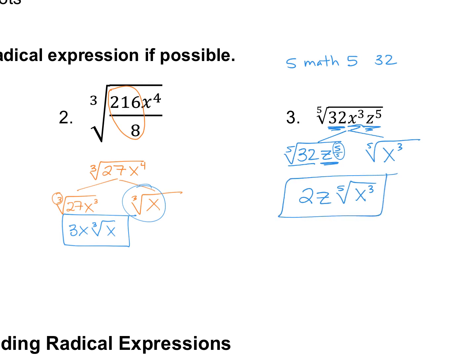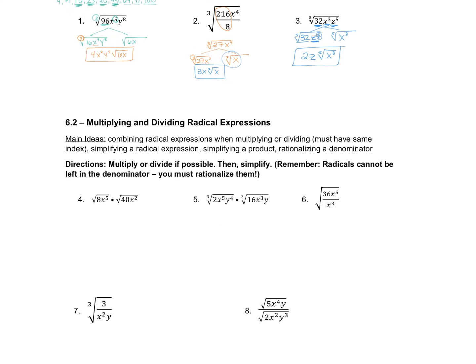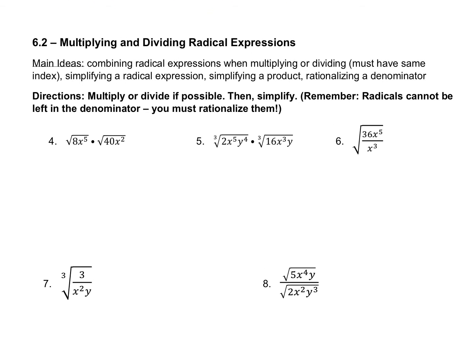That's the 6-1 material. Then we have 6-2: multiplying and dividing radical expressions. It says multiply or divide if possible, then simplify. You cannot have radicals in the denominator in a final answer, so make sure if there is one in the denominator that you rationalize and get it out of there.